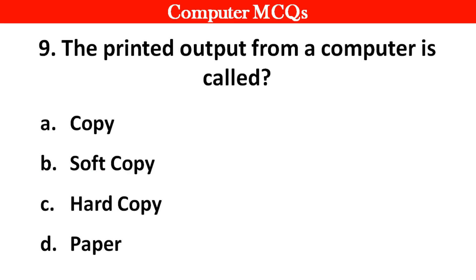The printed output of a computer is called: option A copy, B soft copy, C hard copy, D paper. Right answer is option C, hard copy.